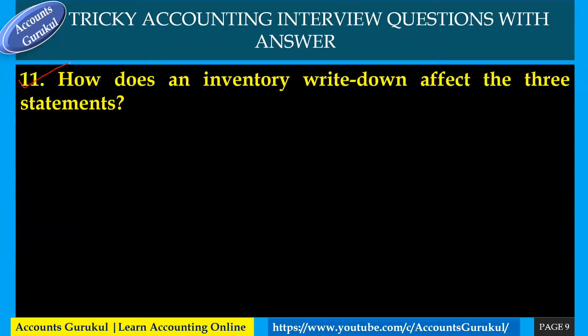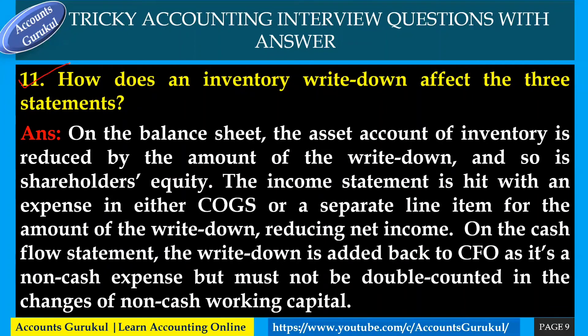How does an inventory write-down affect the three statements? On the balance sheet, the inventory asset account is reduced by the amount of the write-down, and so is shareholders' equity. The income statement is hit with an expense — either in COGS or a separate line item — reducing net income. On the cash flow statement, the write-down is added back to CFO as a non-cash expense, but must not be double-counted in the changes of non-cash working capital.